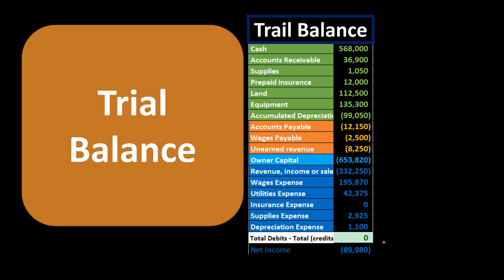Note that the trial balance will indicate that total debits equal total credits, either by two columns showing their totals, or by a zero result — meaning debits minus credits equal zero.